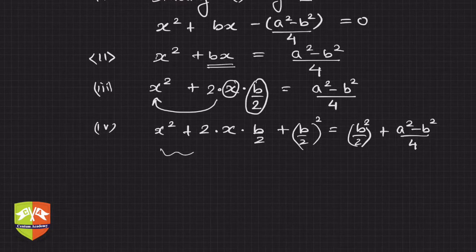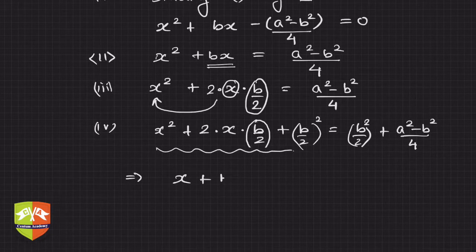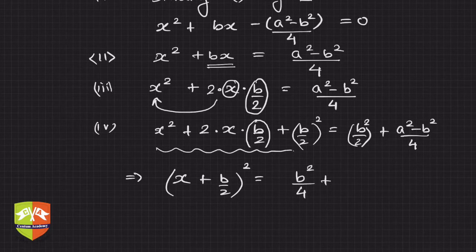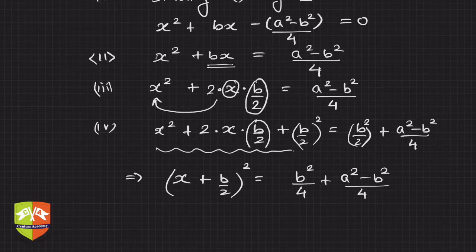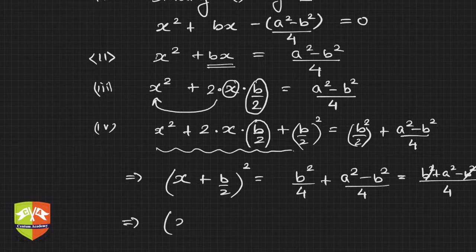So the right-hand side becomes (b/2)² + (a² − b²)/4. Now solving the right-hand side: b²/4 + a²/4 − b²/4. The b² terms cancel, and we are left with a²/4. The left-hand side is the perfect square (x + b/2)².